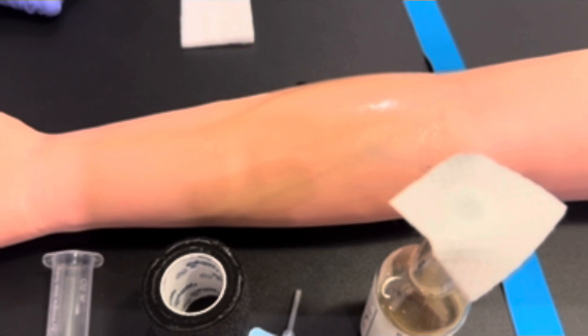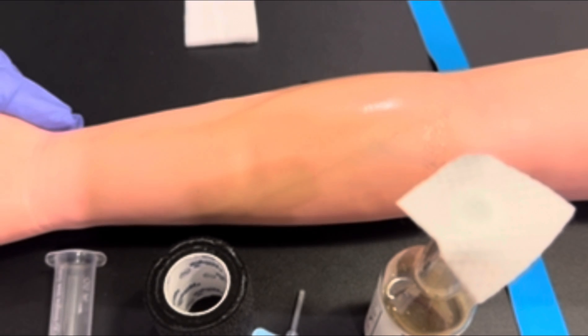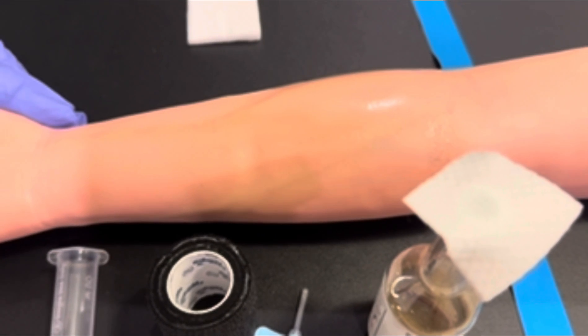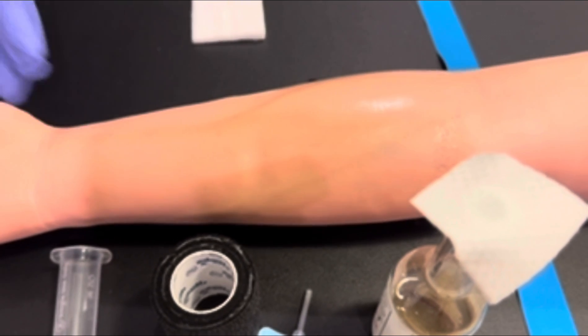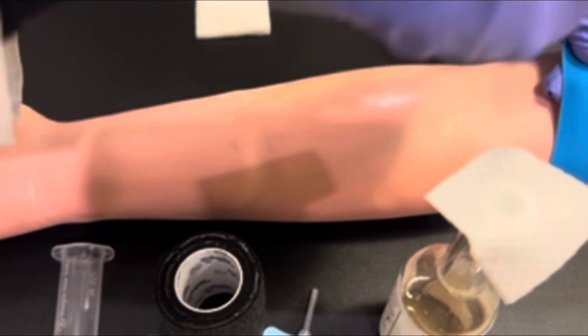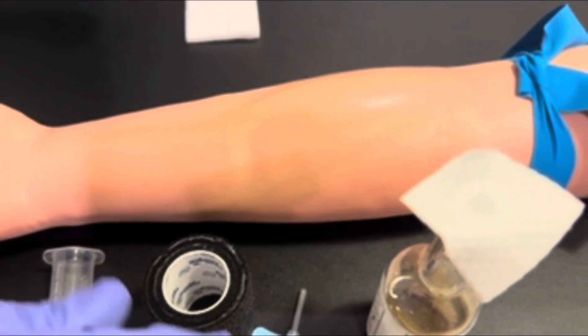The gloves that we are wearing are examination gloves. They are not sterile gloves. So if you were to repalpate that site, you would contaminate the site, which means that you would have to prep and clean the venipuncture site again with 70% alcohol and the chlorhexidine.